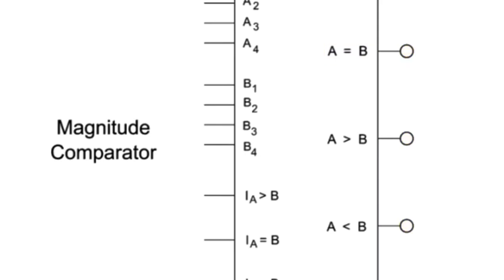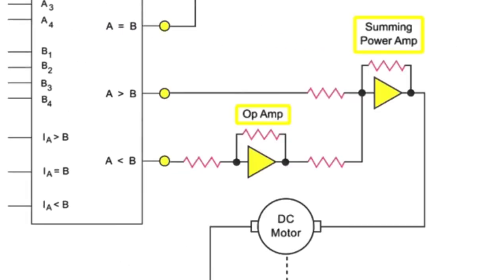The outputs of the magnitude comparator are input to the amplifier. Amplified potential is transmitted for positioning of the motor.